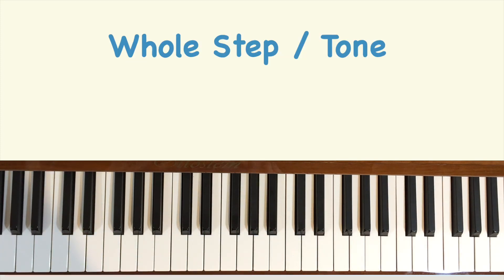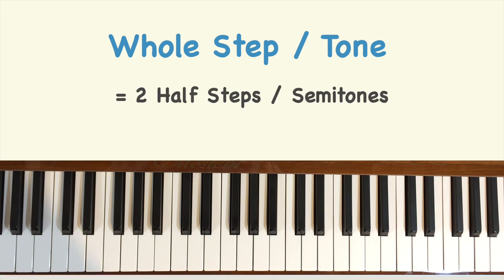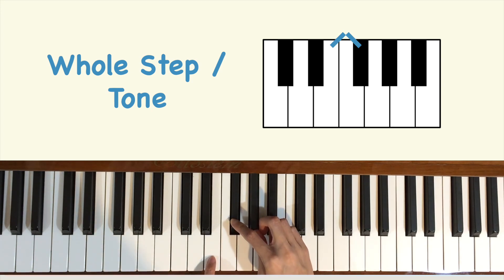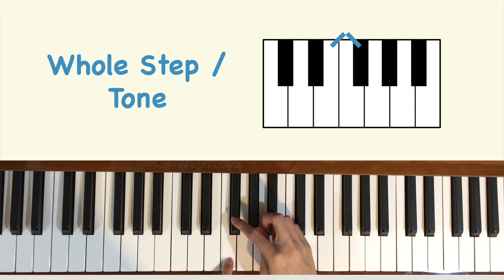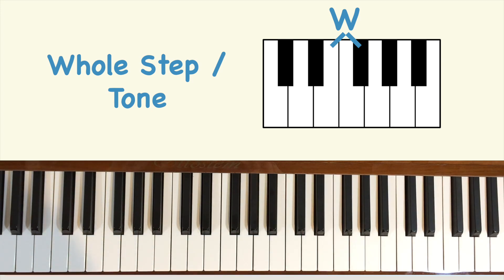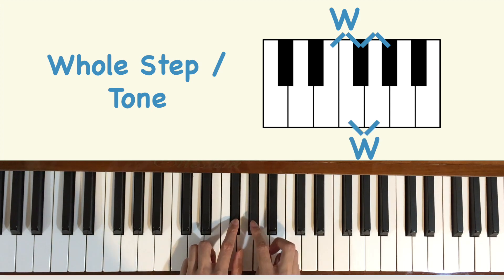A whole step or tone is equivalent to two half steps. For example, the distance between E and F sharp is two half steps: E to F is one half step, and F to F sharp is another half step. So E to F sharp is a whole step. In other words, a whole step always skips a key. So A to G is a whole step, and F sharp to G sharp is a whole step.